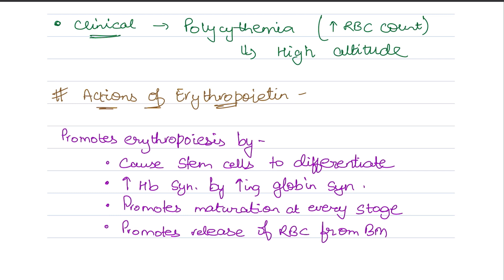Secondly, hemoglobin synthesis will increase. Look, RBC production is necessary, and main component is hemoglobin. So hemoglobin synthesis will increase in the heme part because heme is the metallic part. Then maturation is promoted at every stage.